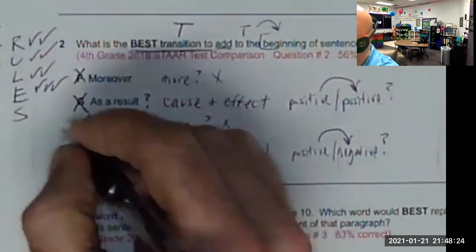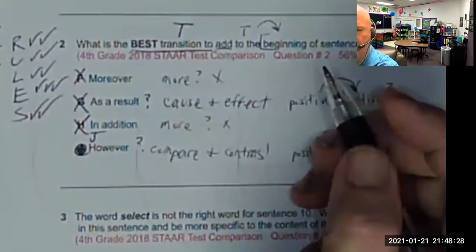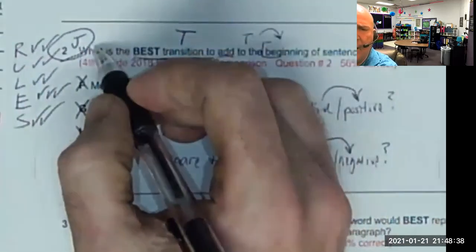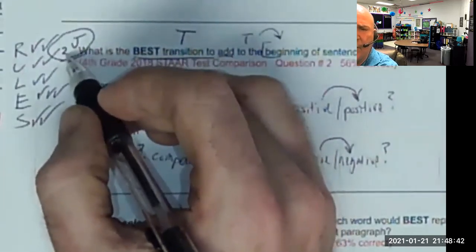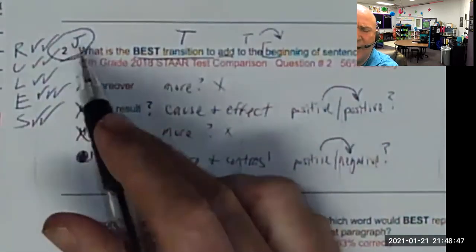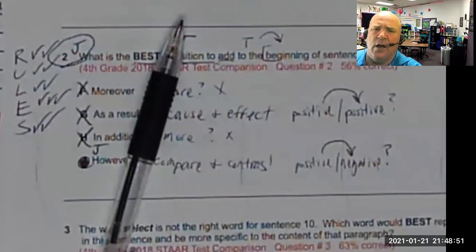Something I learned from an awesome teacher this past year: before you go put it in the scantron, write the letter J right next to the number in the book — so you know that 2J in the book has to match 2J in the scantron.